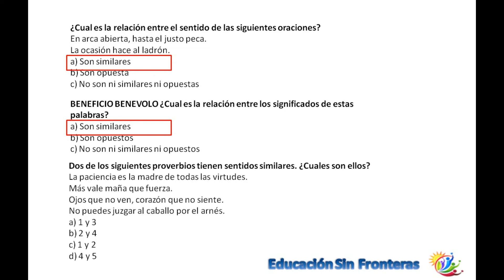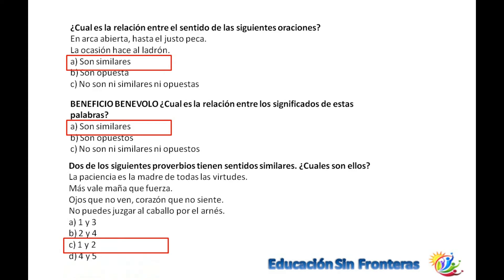Dos de los siguientes proverbios tienen sentido similar. ¿Cuáles son? La paciencia es la madre de todas las virtudes, habla de paciencia. Más vale maña que fuerza, habla de inteligencia. Ojo que no ve, corazón que no siente. No puedes juzgar al caballo por el alquiler. Son la uno y la dos: ambos tienen relación con un valor intrínseco que no se puede ver, una cualidad del interior del ser humano.